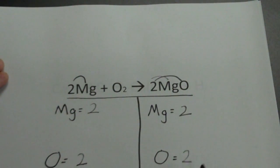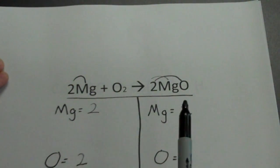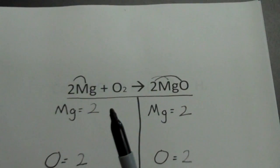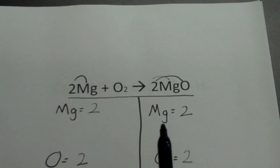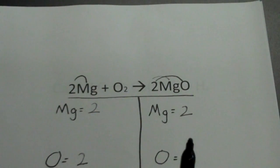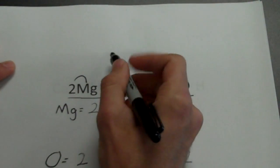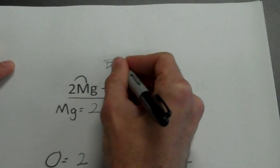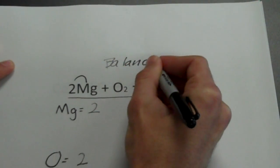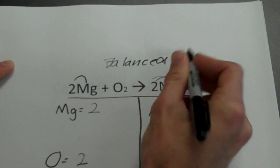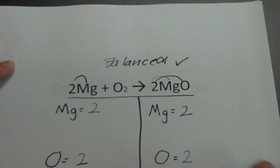All the atoms are equal and they are the same type. When this reaction took place, we had the same type and number of atoms to start with as we ended with. So this is a balanced chemical equation. Let's try one more.